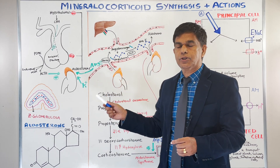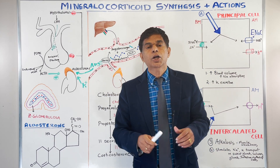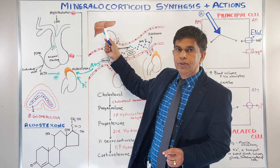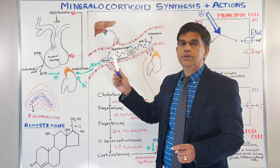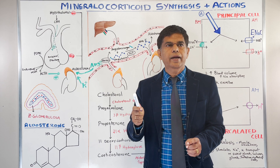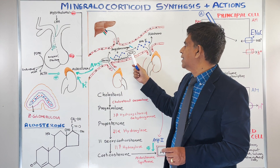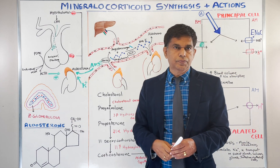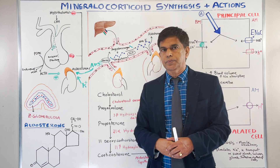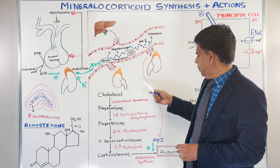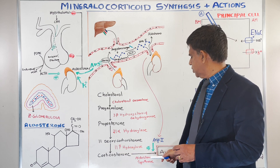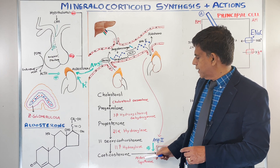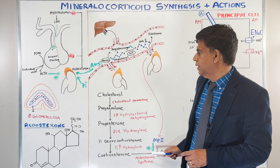We have renin, which is produced by the juxtaglomerular cells of the kidney. It acts on angiotensinogen, produced in the liver, to make angiotensin I. With the help of angiotensin-converting enzyme (ACE), angiotensin I is converted into angiotensin II. Angiotensin II plays the bigger role — it activates the enzyme aldosterone synthase, which catalyzes the final conversion step, producing aldosterone.